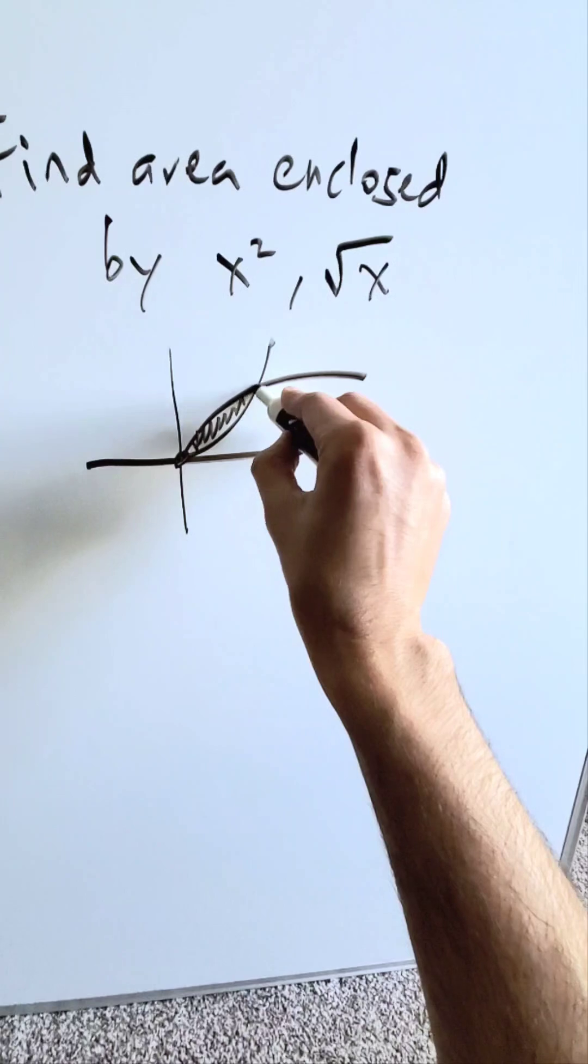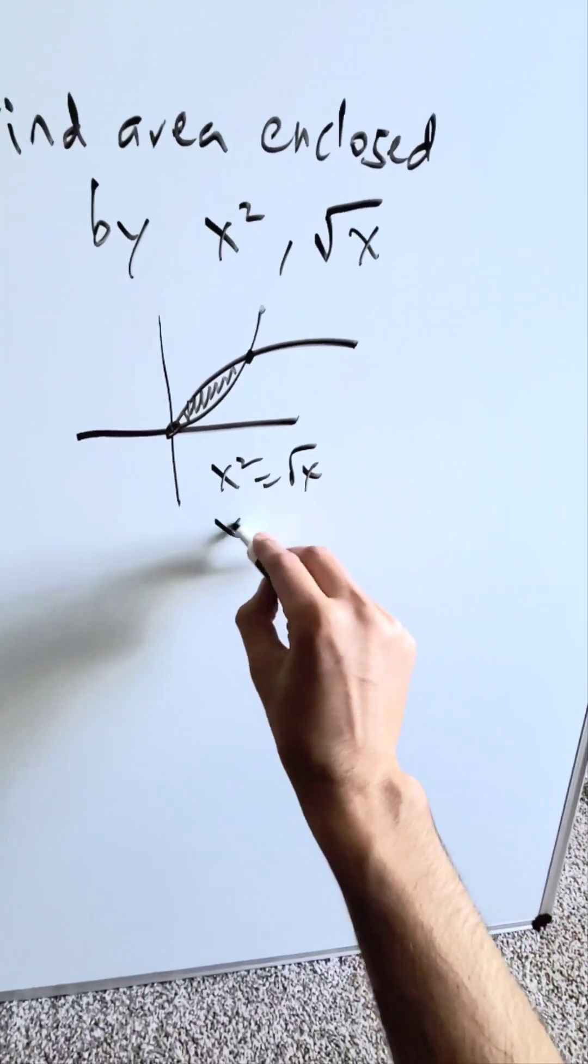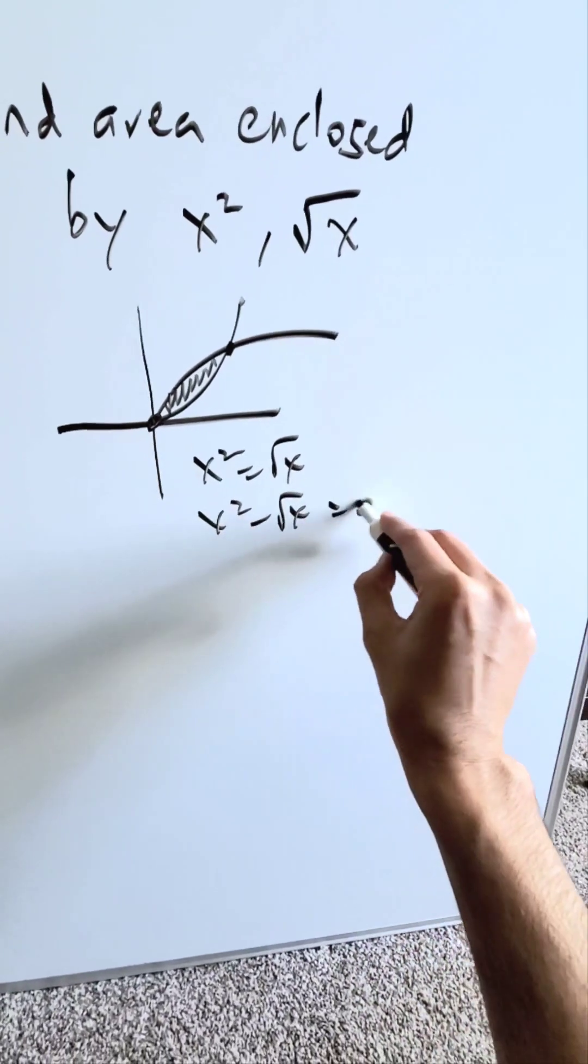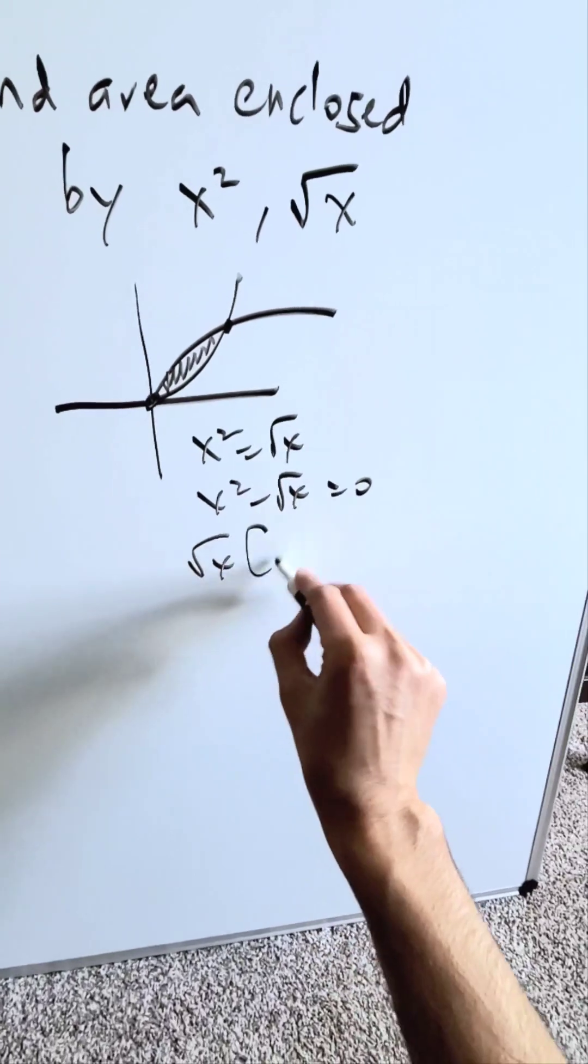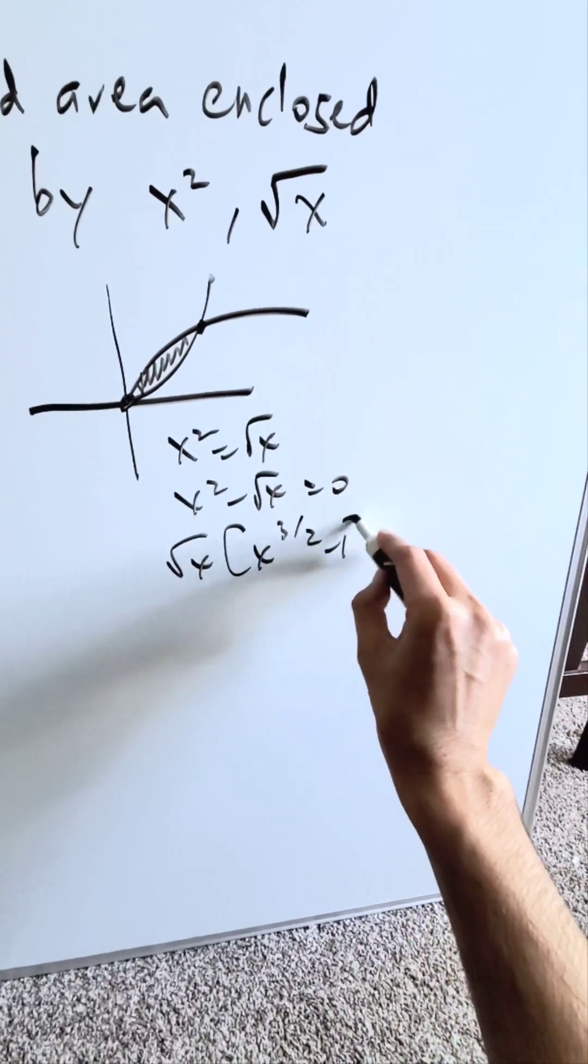Let's look for the intersection points. x² equals √x. x² minus √x equals 0. Isolate √x. You have here x^(3/2) minus 1 equals 0.